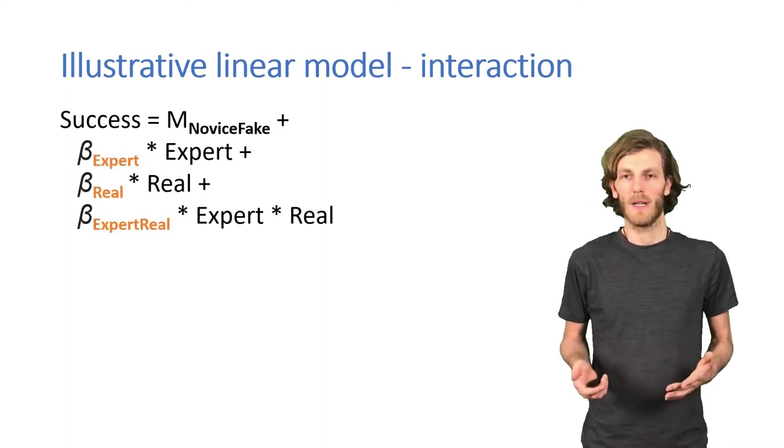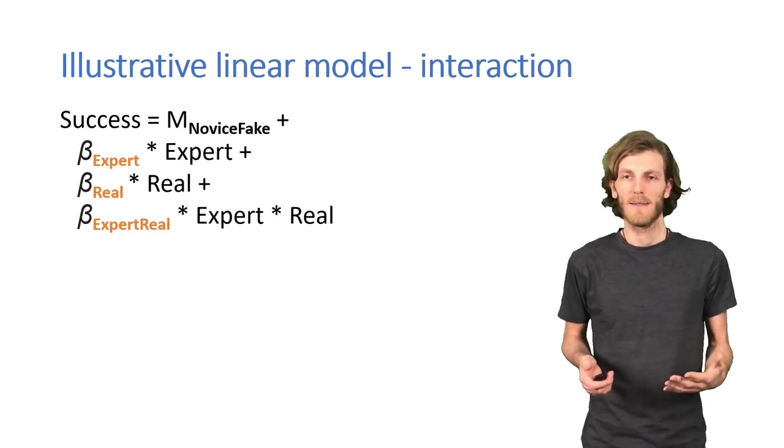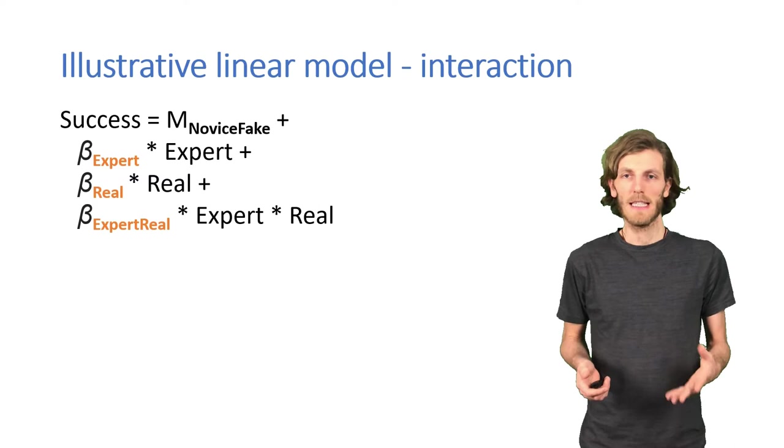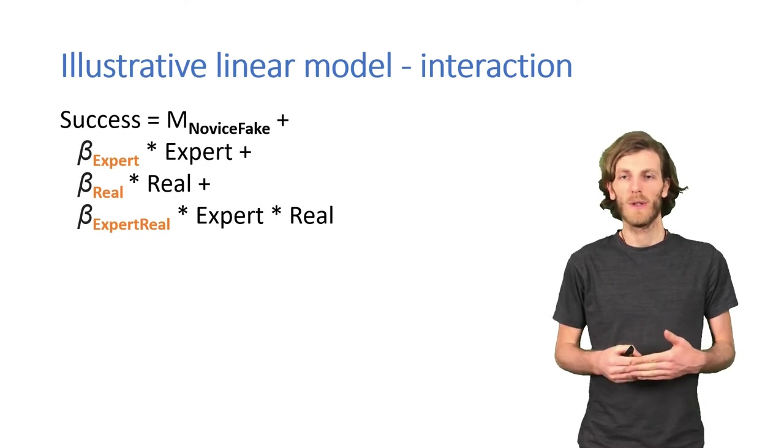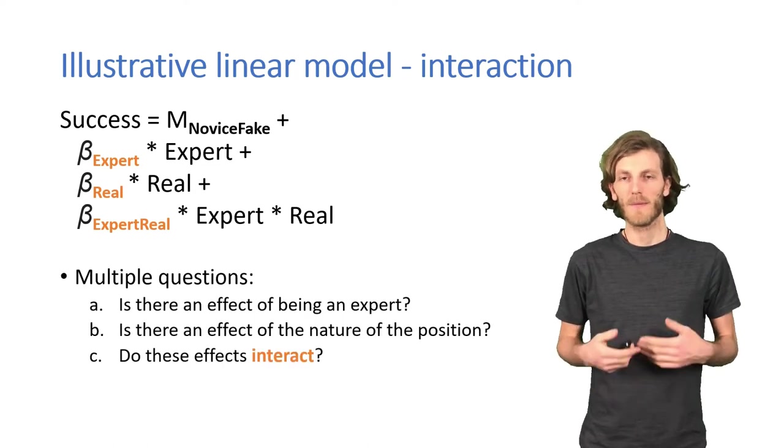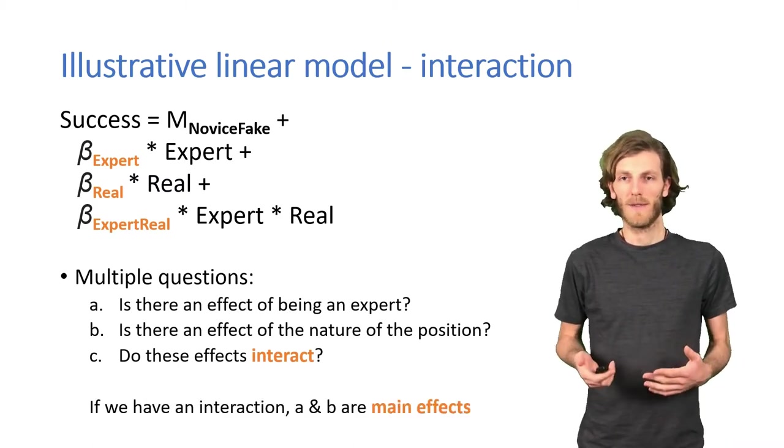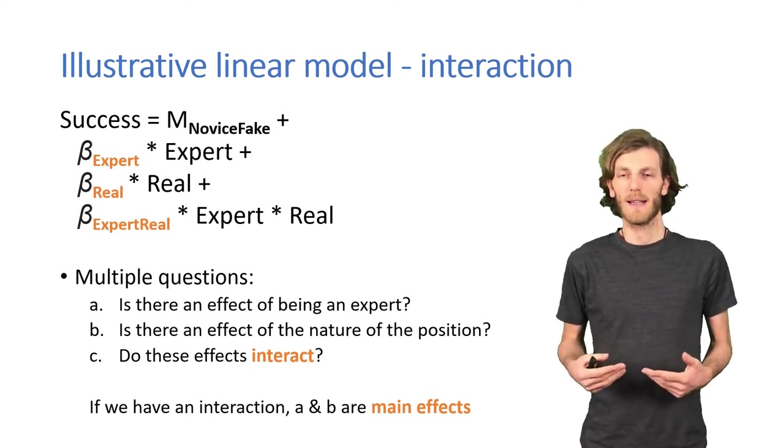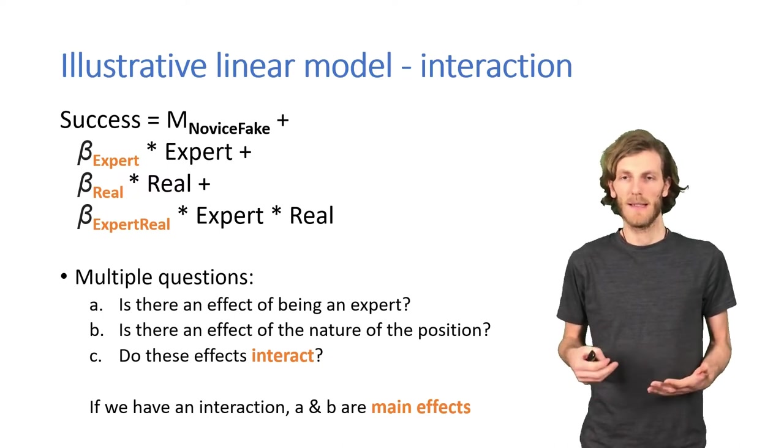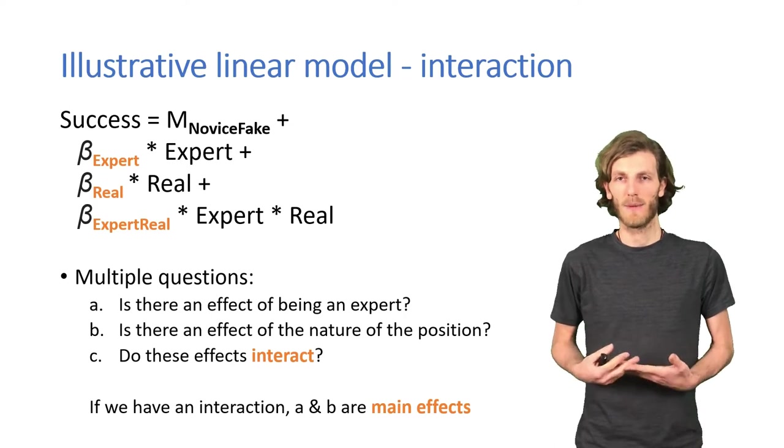So, again, we have the intercept, we have an effect of expertise, we have an effect of the realness of the position, and now we have a term where those two are multiplied, where those two appear together. And that last term is what the interaction is all about. In the presence of an interaction effect, we call the other effects main effects. So, right now we are interested in two main effects, an effect of expertise, an effect of the position type, and an interaction between the two of them.